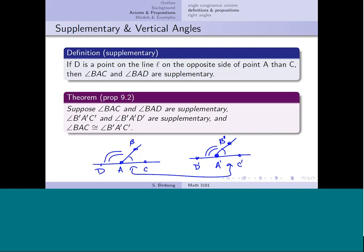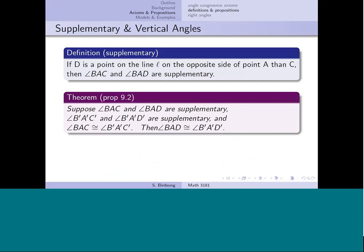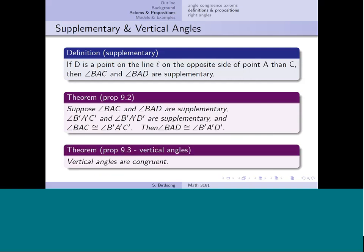We also have vertical angles. Recall that vertical angles are formed when two lines cross — the angles that are opposite each other. We get the same result as in classical geometry: vertical angles are congruent.